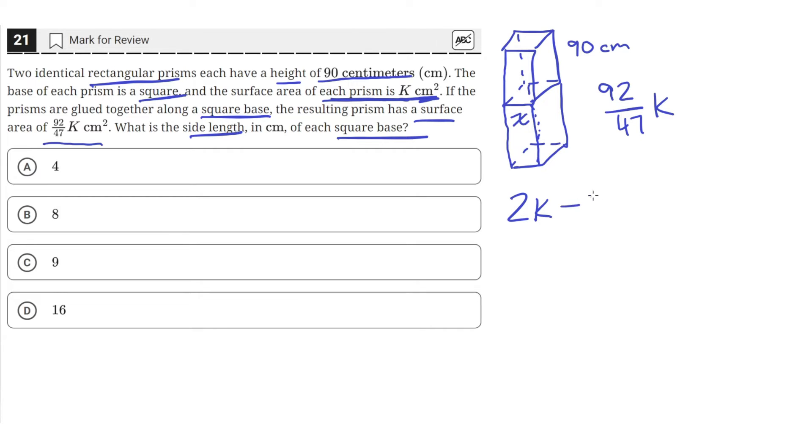So that would be 2 squares, so 2x². And that has to be equal to 92 over 47 k, since it was given that the area of this resulting shape is 92 over 47 k.